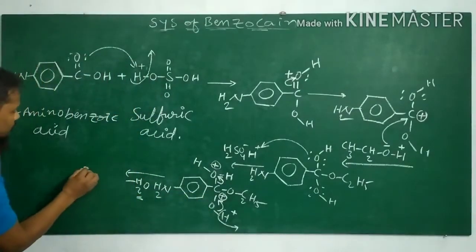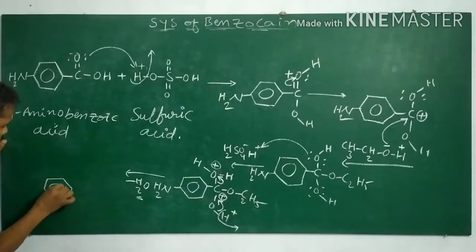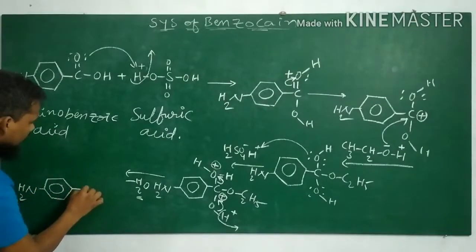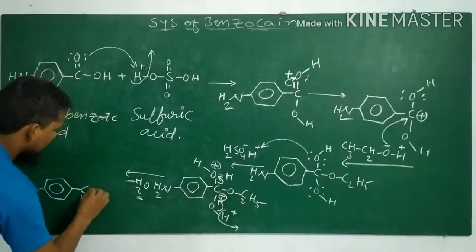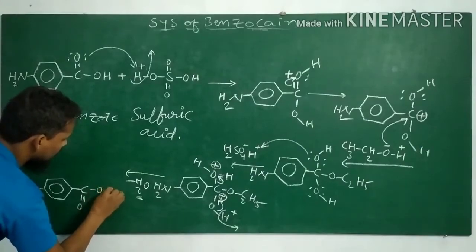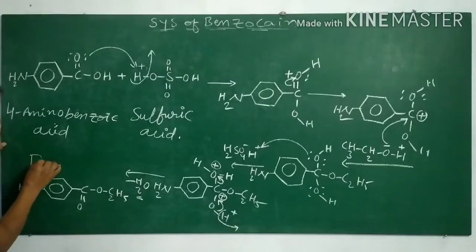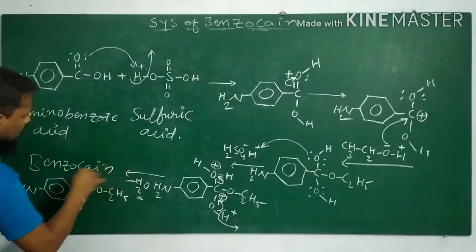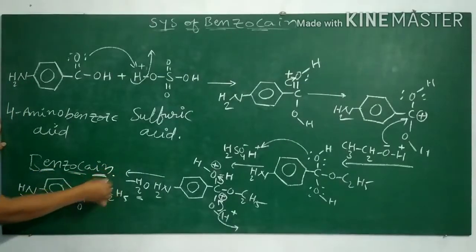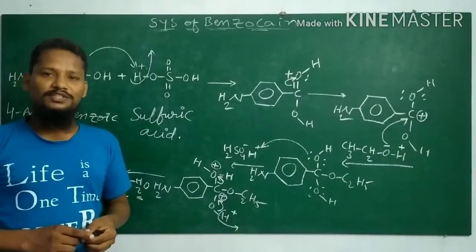Now our resultant molecule is benzocaine — with a C₂H₅O group. This is our benzocaine. Hope you understand. Thanks for watching this video.